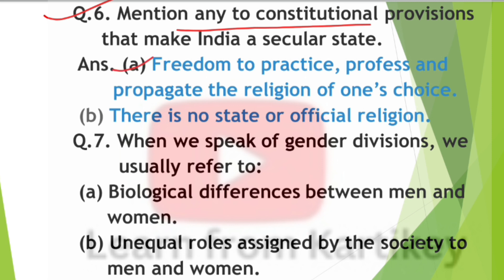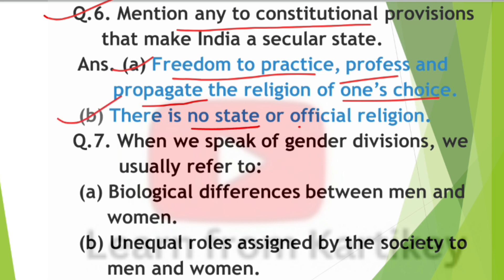Question number 6: Mention any constitutional provisions that make India a secular state. First point — freedom to practice, profess, and propagate the religion of one's choice. Second point — there is no state or official religion.